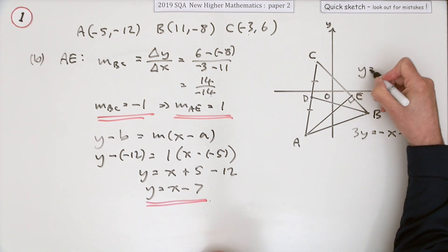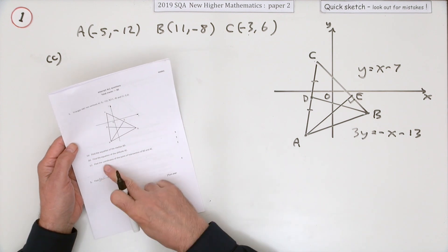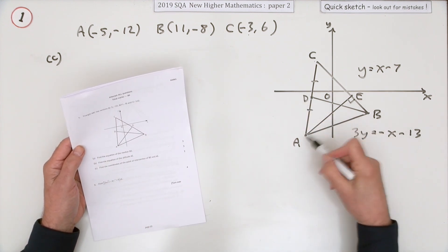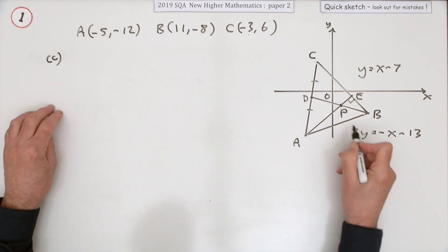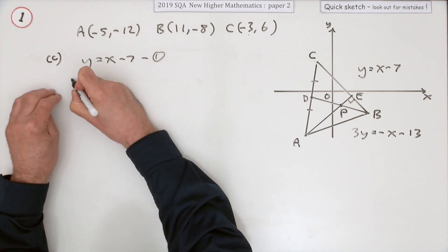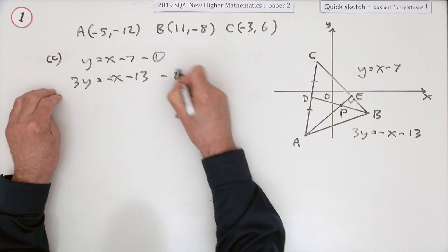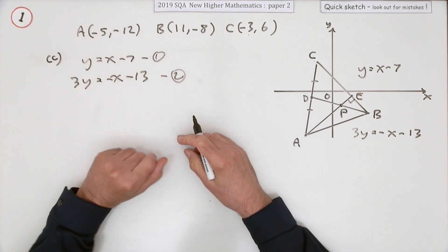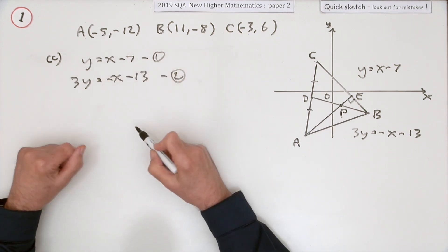Take a little note of that one, y equals x minus 7. Now the last part, just for two marks, what are the coordinates of the point of intersection of BD and AE? This point here. Point of intersection. Well you've got these two equations: y equals x minus 7, I'll call that 1, and 3y equals -x minus 13, I'll call that 2.